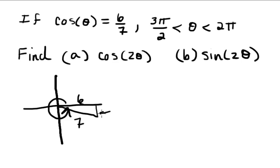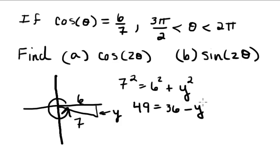We can use the Pythagorean theorem to find this leg. So I know that 7 squared is equal to 6 squared plus, we'll say, y squared. We'll call that piece y. So 49 equals 36 plus y squared.